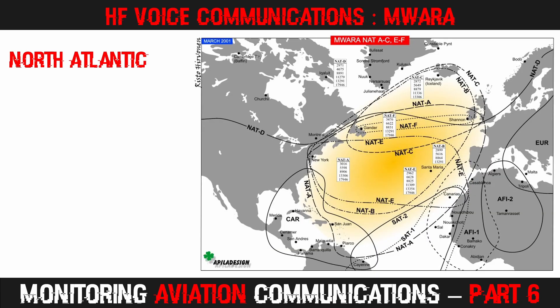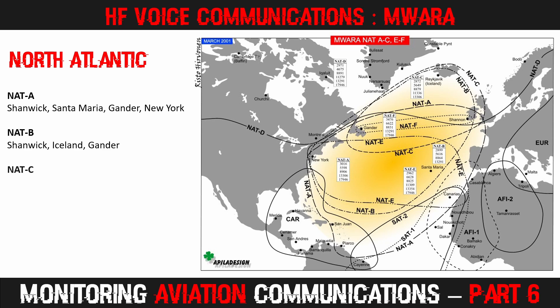The North Atlantic is one of the most flown routes in aviation. When the world isn't dealing with major pandemics, there are thousands of aircraft transiting each day. You'll notice on the map that NAT A, B, C, E, and F cover the main areas of the Atlantic Ocean. At various times of the day, different frequencies will be in use. Generally, these frequencies carry a reasonable amount of traffic, with satellite-equipped aircraft primarily checking in with Shanwick, Santa Maria, Gander, or New York along their route.